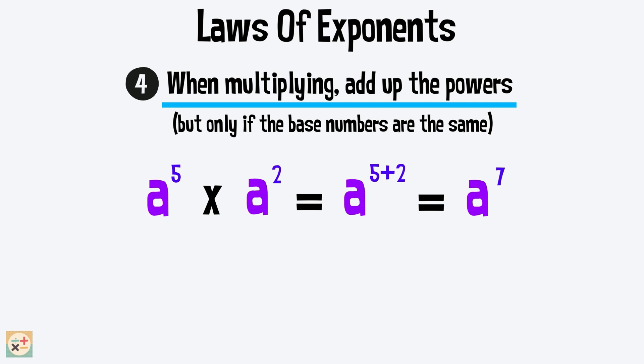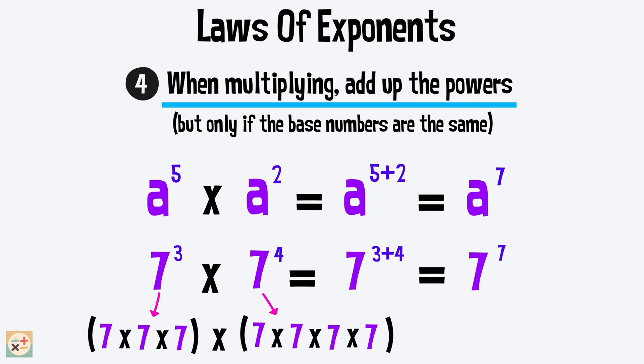Let's see how this works and makes sense by looking at some examples. If we rewrite this example out without using exponents, we can see we do in fact have 7 multiplied by itself 7 times. Remember, this rule won't work if the base numbers are different.